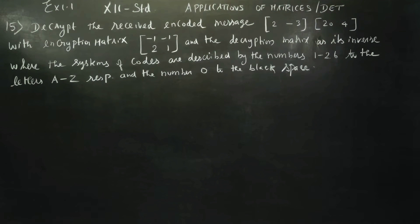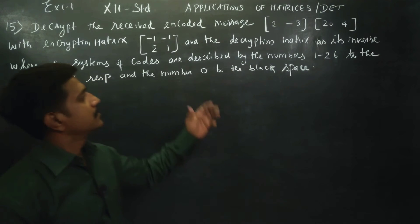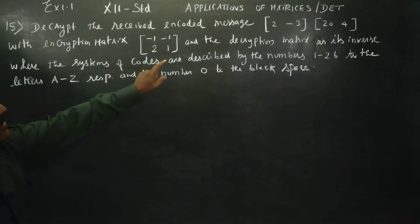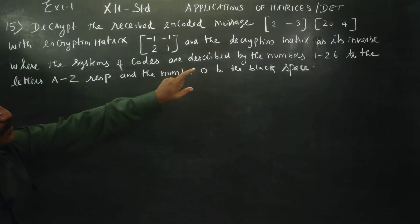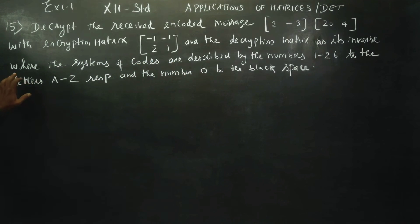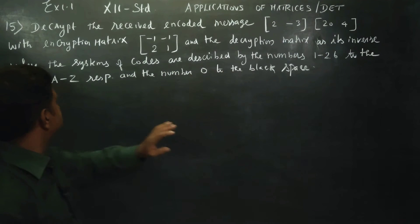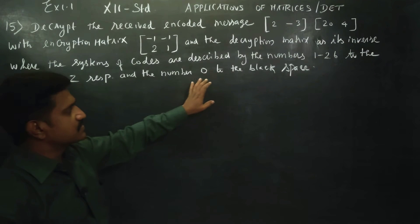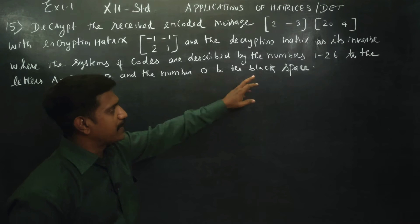Hello 12th standard students, I am Mitro Karnagaran. Decrypt the received encoded message with the encryption matrix and the decryption matrix as its inverse, where the system of codes is described by the numbers corresponding to the letters A to Z respectively, and 0 corresponding to the blank space.